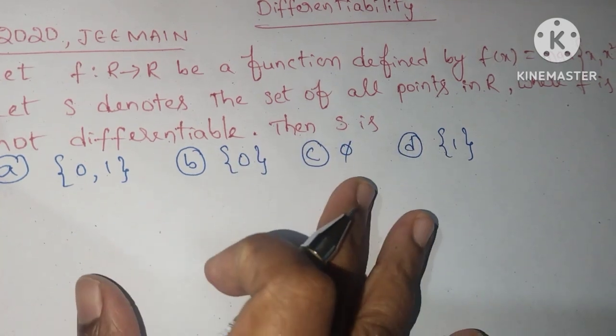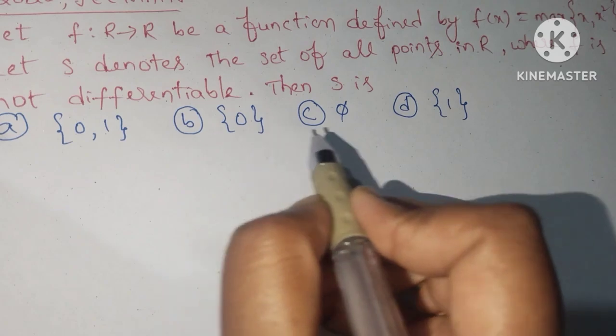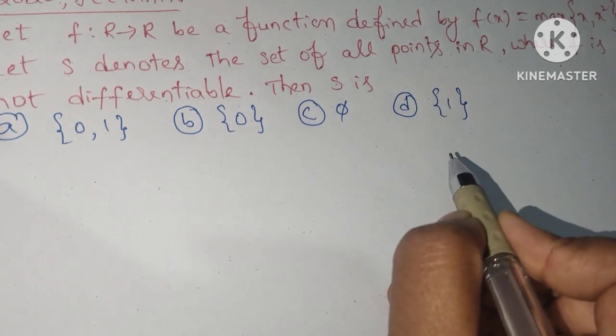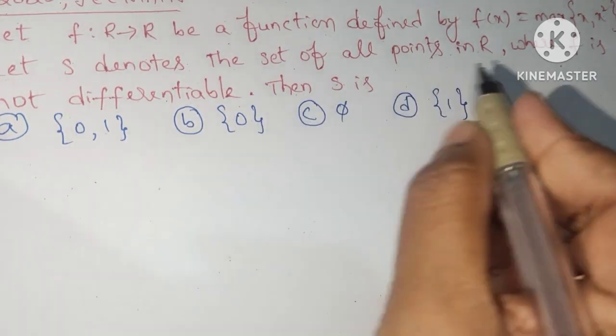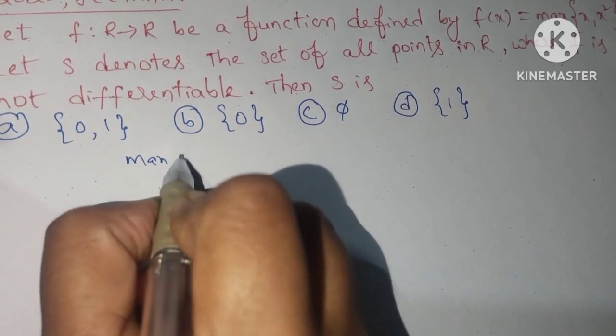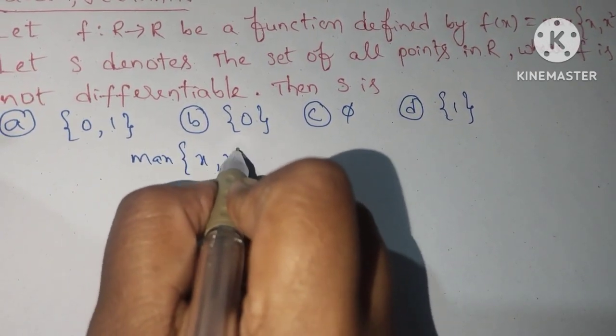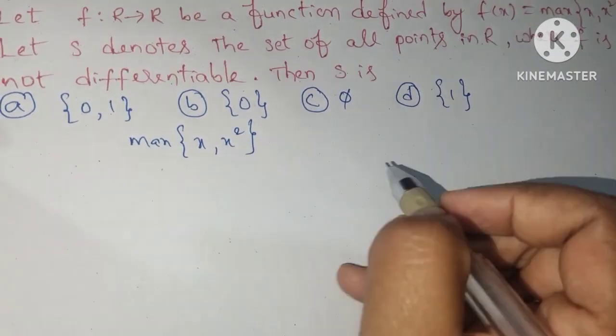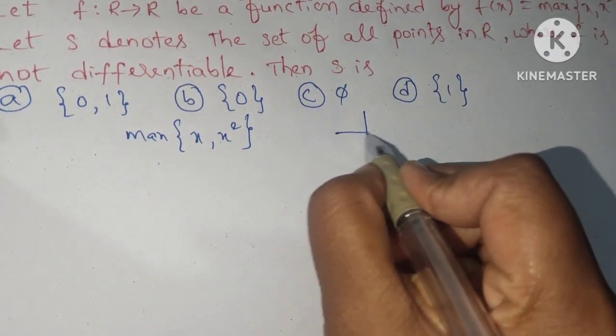So the given options are {0,1}, {0}, ϕ, {1}. What is the given? Max of x comma x². They gave here maximum x comma x². Here we follow the graph.